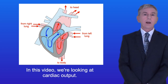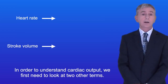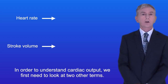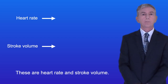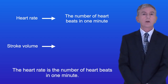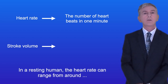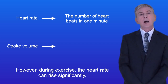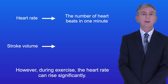In this video we're looking at cardiac output. In order to understand cardiac output we first need to look at two other terms: heart rate and stroke volume. The heart rate is the number of heartbeats in one minute. In a resting human the heart rate can range from around 60 beats per minute to around 100 beats per minute. However, during exercise the heart rate can rise significantly.